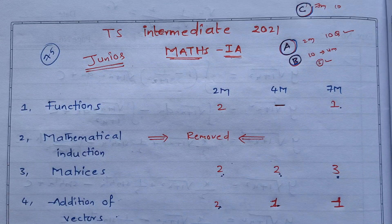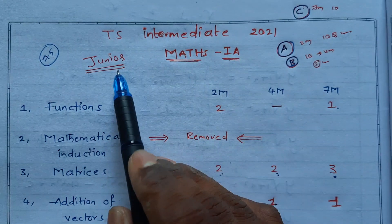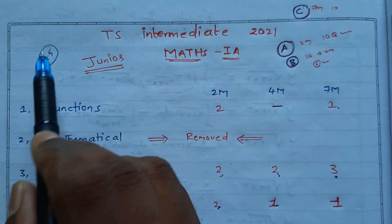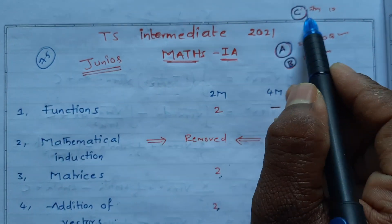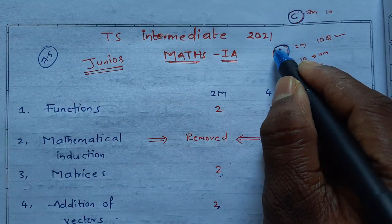Hi everyone, welcome to our channel. Next video is TS Intermediate 2021 Math 1A Juniors, Math import model paper or blueprint. 75 marks total, first two in the, Section A, Section B, Section C.